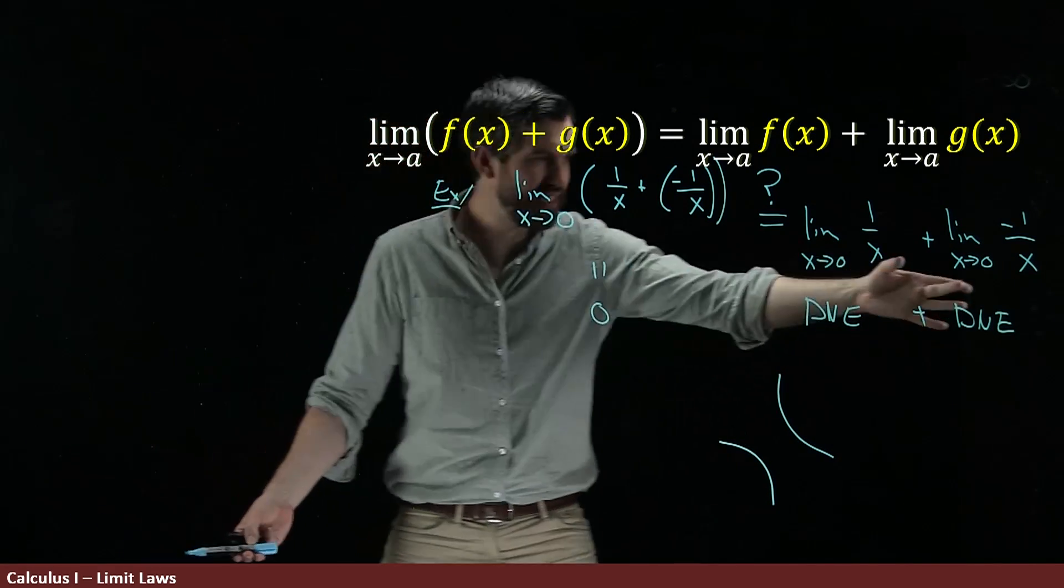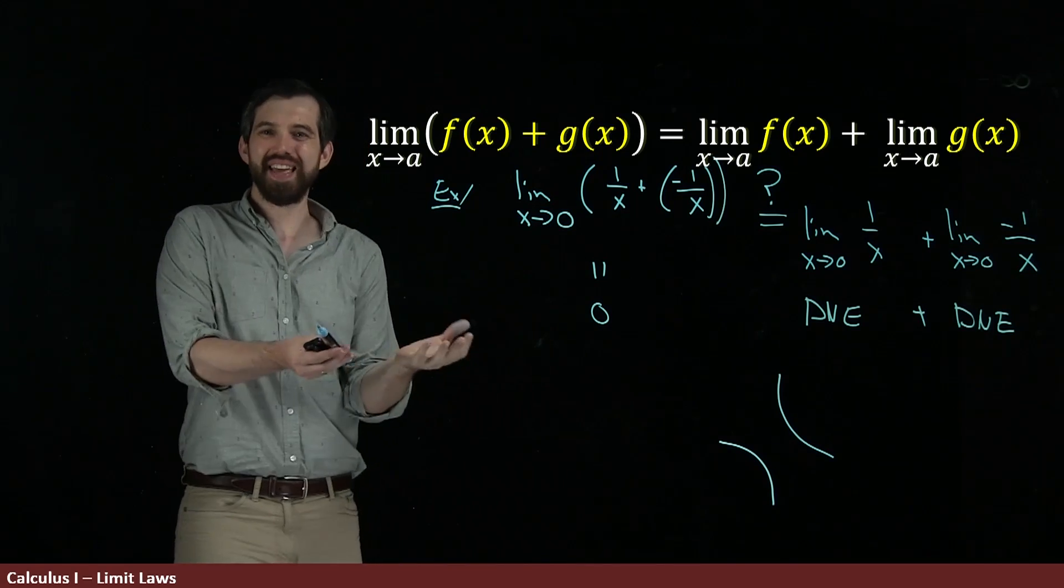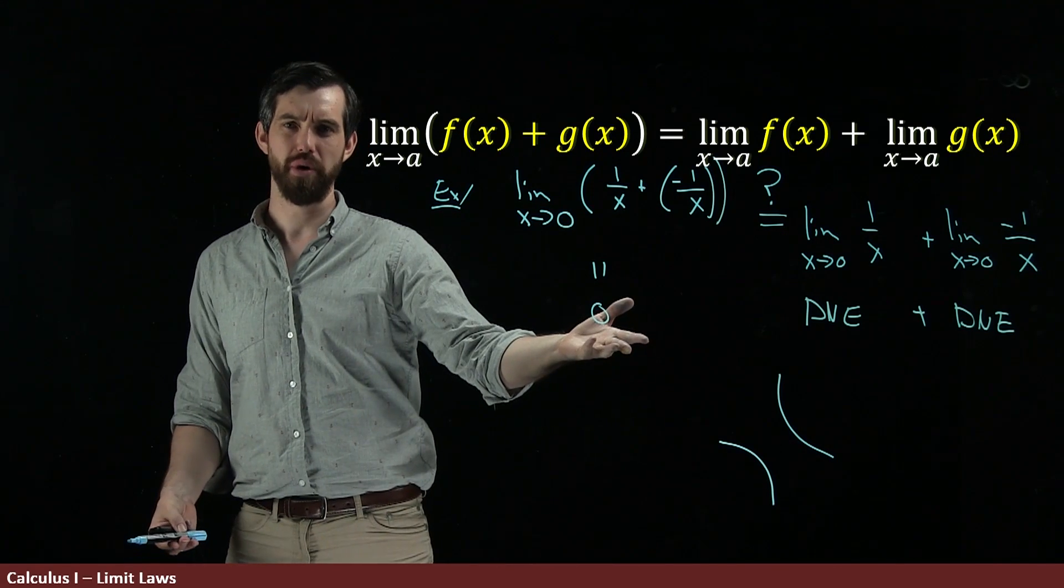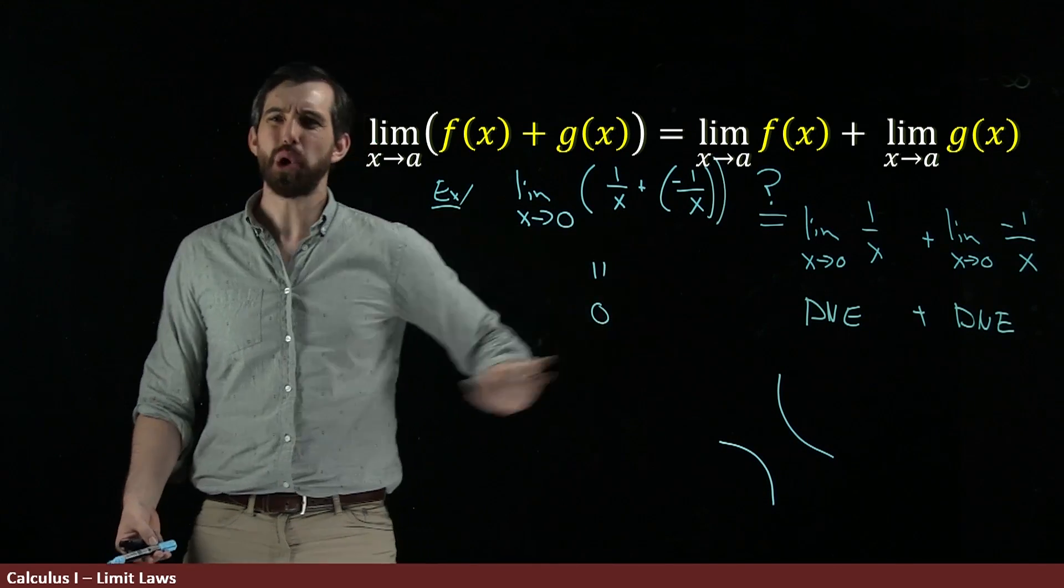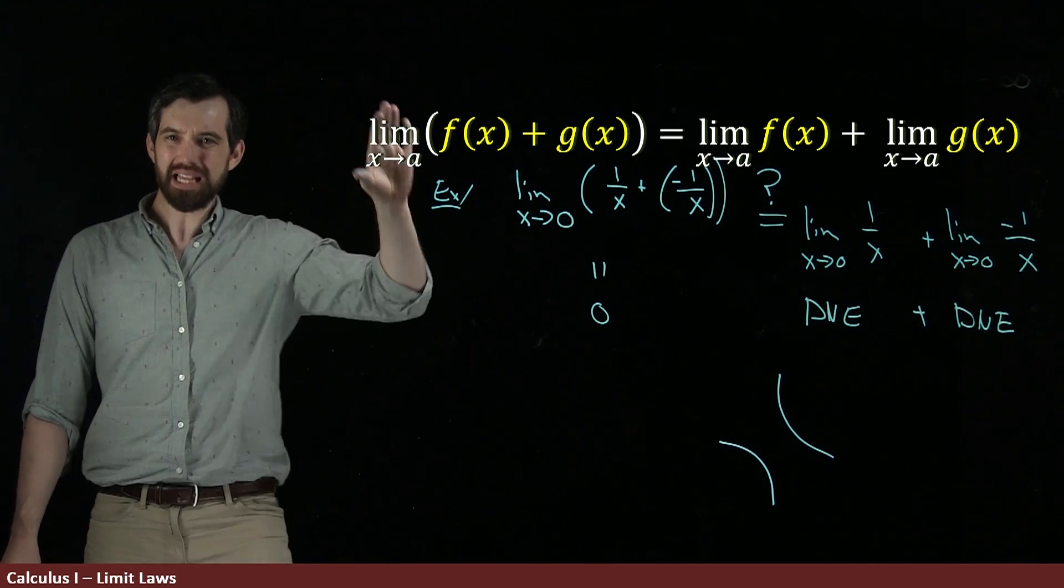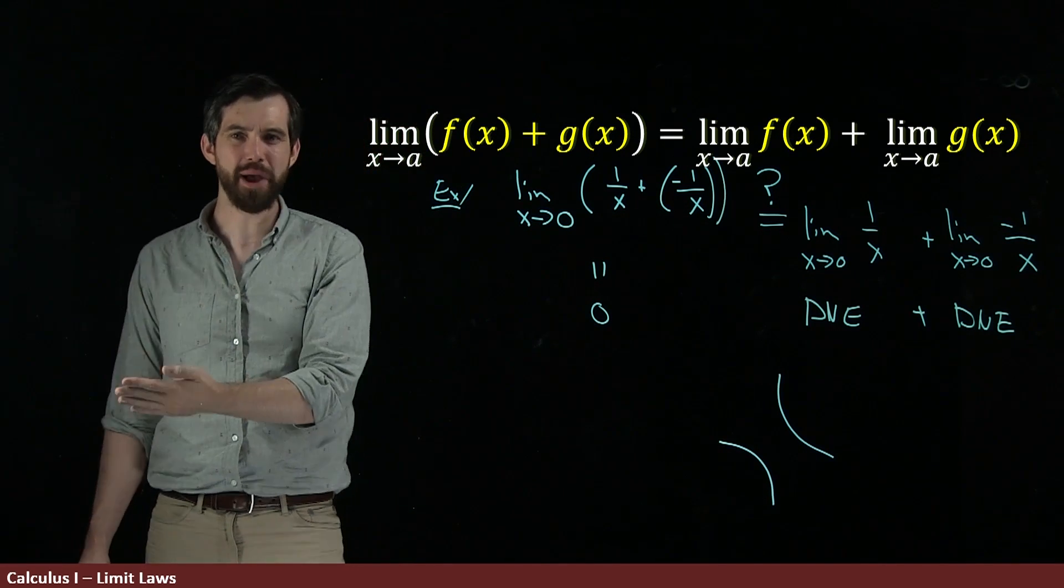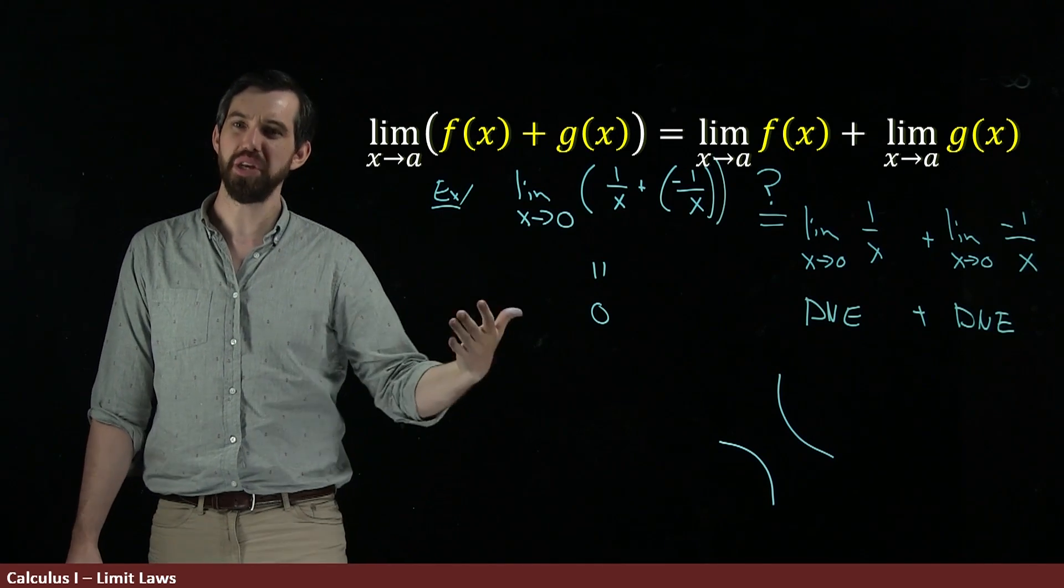So this whole formula is actually kind of nonsense in this scenario because this doesn't exist, it doesn't equal any number. This doesn't exist, it doesn't equal any number. Yet we're saying that they add up together to be equal to this 0. So what's the problem with my example? Because I like my formula. We were well motivated by it in the previous example. But for this example, it appears to be nonsense.